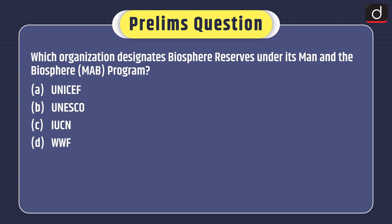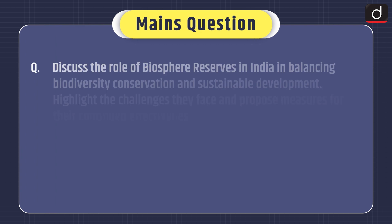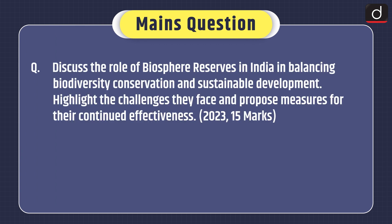Now it's time for practice questions. The prelims question is: Which organization designates Biosphere Reserves under its Man and the Biosphere or MAB program? Options are A. UNICEF, B. UNESCO, C. IUCN, or D. WWF. The mains practice question is: Discuss the role of Biosphere Reserves in India in balancing biodiversity conservation and sustainable development. Highlight the challenges they face and propose measures for their continued effectiveness.